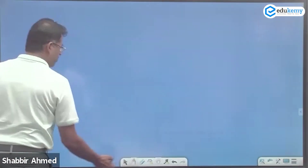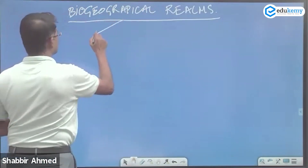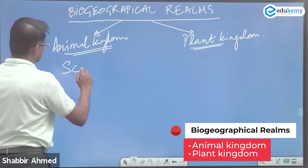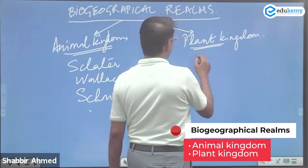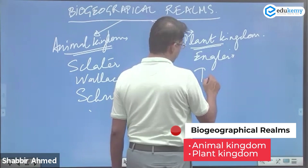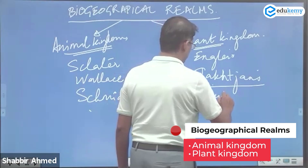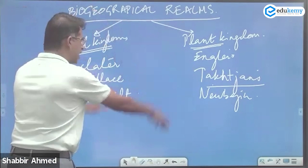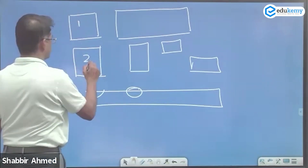Now, remember biogeographical REMS. There are animal kingdoms and plant kingdoms. Animal kingdoms were given by Sclater and Wallace. For plant kingdoms, we have Engler and Takhtajan's scheme. The latest one is Newbigin's scheme. They have asked about the Newbigin scheme before, and they can ask anything, so remember these names.